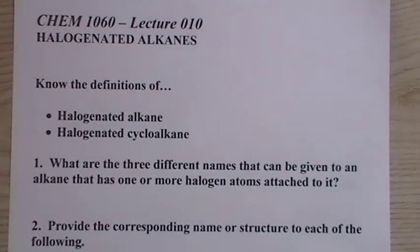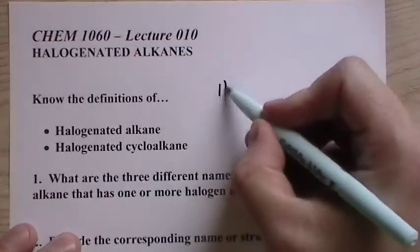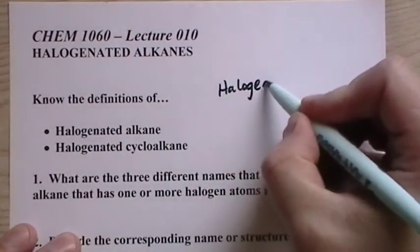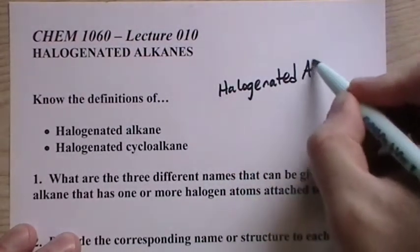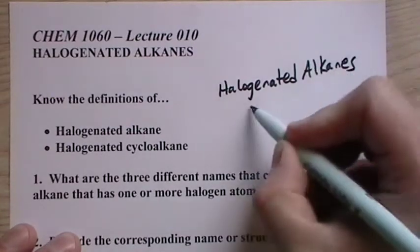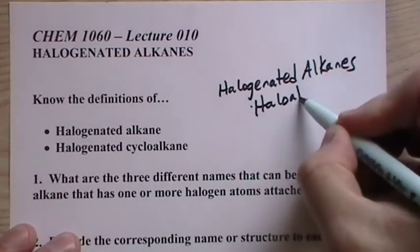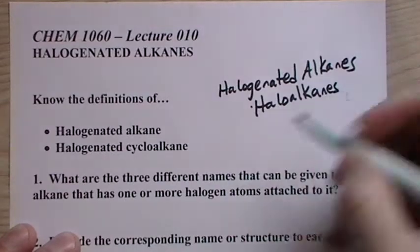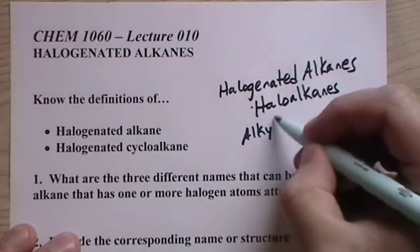First question is, what are the three different names that can be given to an alkane that has one or more halogen atoms attached to it? Well, we know halogenated alkanes, that's one. Then we have halo or haloalkanes, second. And then we have alkyl halides.